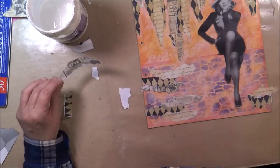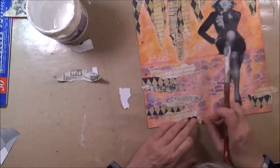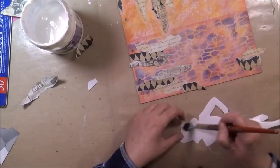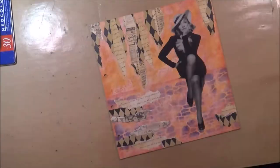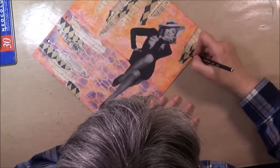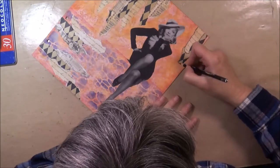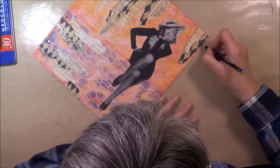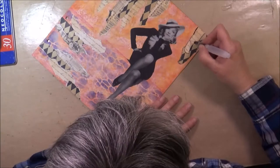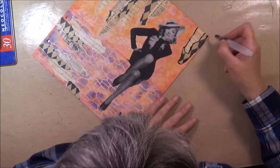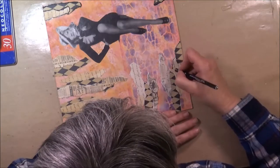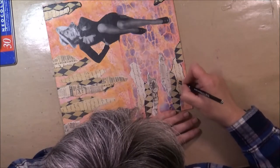All right, back to my page. All the bits and pieces are down, and now I'm adding the image again using matte medium. Now I want to define the edges of these pieces a little bit, and I use a Stabilo All and activate it with a water tank brush. It gives it a nice fuzzy edge and also covers all the white edges you get when you rip paper.